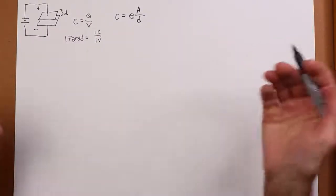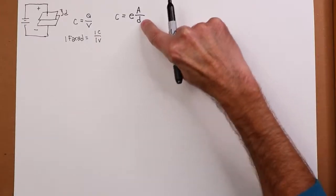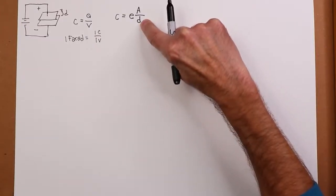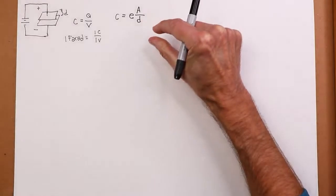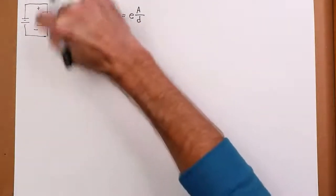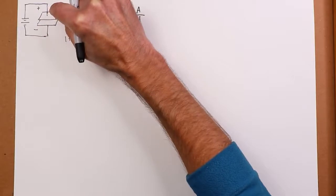Because just because you have a high permittivity doesn't necessarily mean you have a high breakdown strength. And it's the breakdown strength that plays into the spacing D. Because the closer the plates get, the lower the voltage will be before we have an arc through.